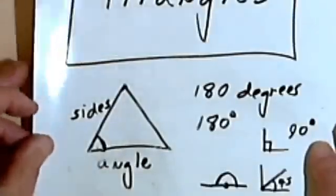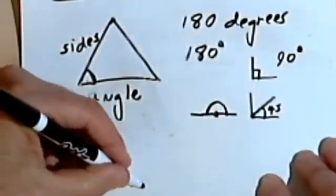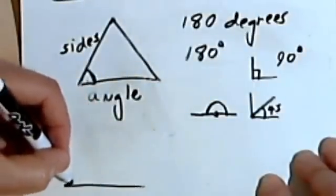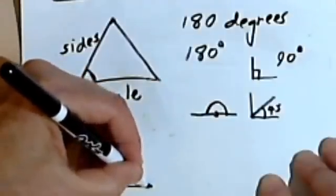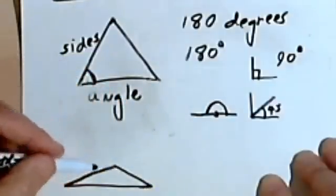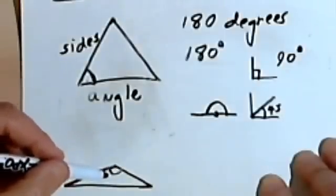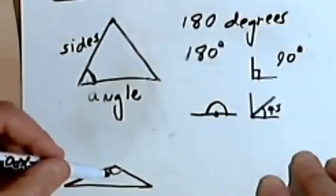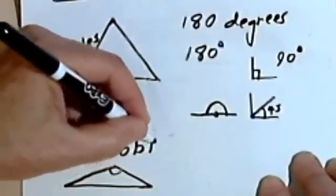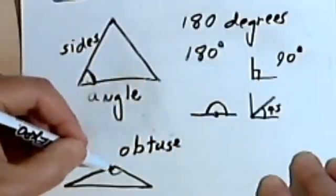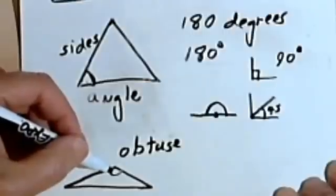Now there are all kinds of ways to classify triangles. Let's start with this as an example. If I have a triangle and one of the angles is larger than 90 degrees, that's called an obtuse angle, and the triangle is called an obtuse triangle. Obtuse means dull, or not sharp.